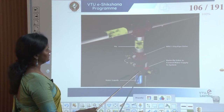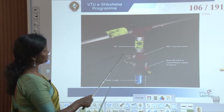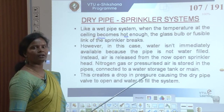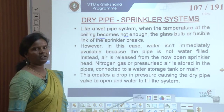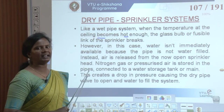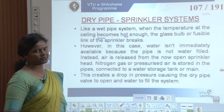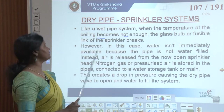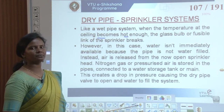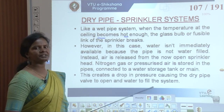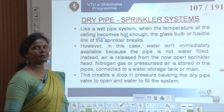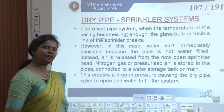When hot air rises up, however, water is not immediately available because the pipe is not water-filled. Instead, air is released from the now-open sprinkler head. Nitrogen gas or pressurized air is stored in the pipes, connected to a water storage tank or mains. This creates a drop in pressure causing the dry pipe valve to open and water to fill the system.